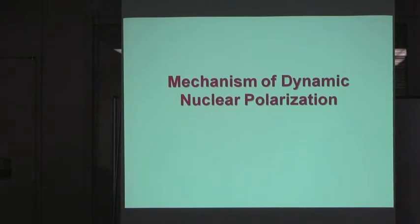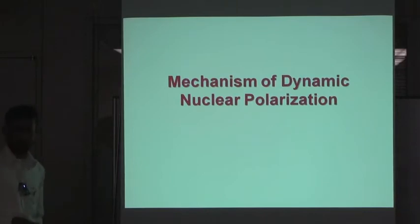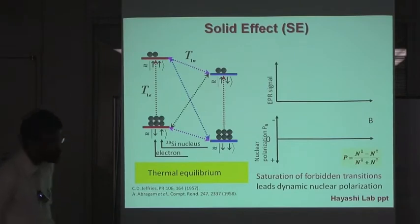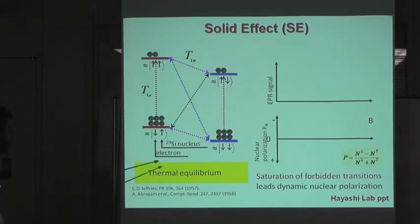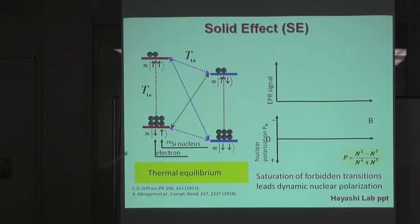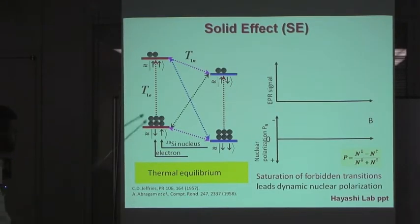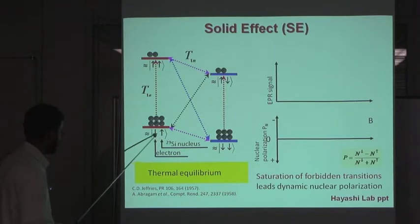Mechanism of dynamic nuclear polarization. I will explain the solid effect because in my sample I observe the solid effect. This is a thermal equilibrium diagram of the electron and 29 nuclear spin system. You can see the population of down electron spin to up electron spin ratio is 3 to 1. In case of 29 silicon, up to down is 1 to 1.